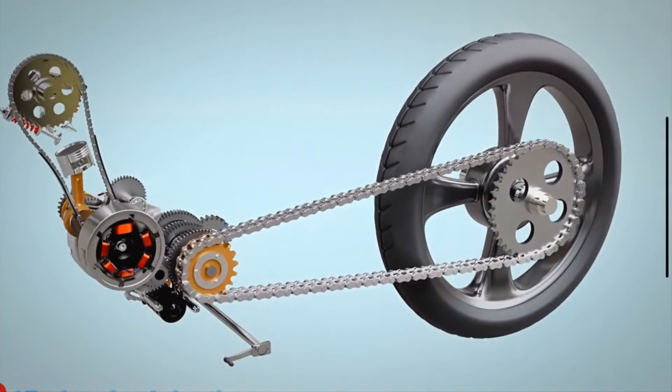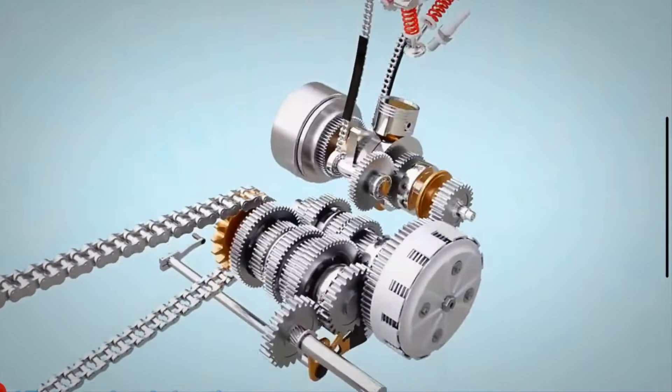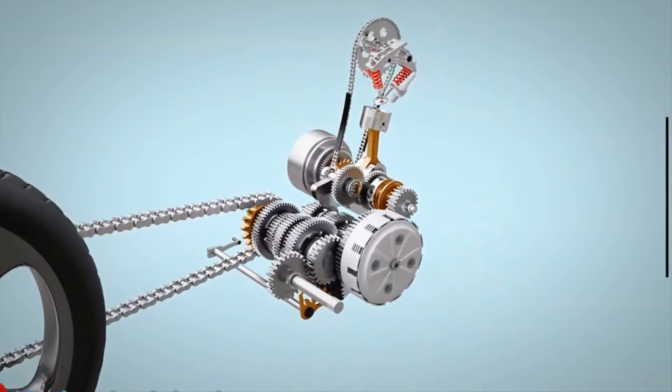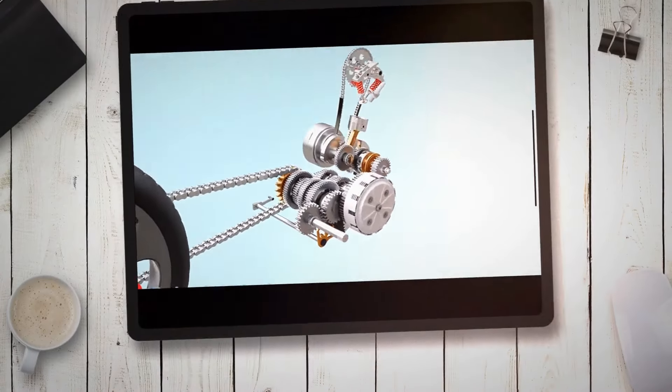The size of the combustion chamber in a motorcycle engine is directly related to its power output. The upper limit is about 1,500 cubic centimeters (cc), while the lower limit is about 50 cc.